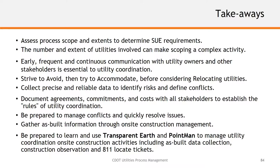That wraps up our course on utility process management. Key takeaways include: first, assess process scope and expense to determine SUE requirements. Early in the programming, planning, budget, and scoping phase, it's essential to look at the project limits and really hone in on your scope — do you need quality level B everywhere, or can you focus quality level A only on specific segments? Pinning down the scope of work saves money and helps lay out your design budget more accurately.